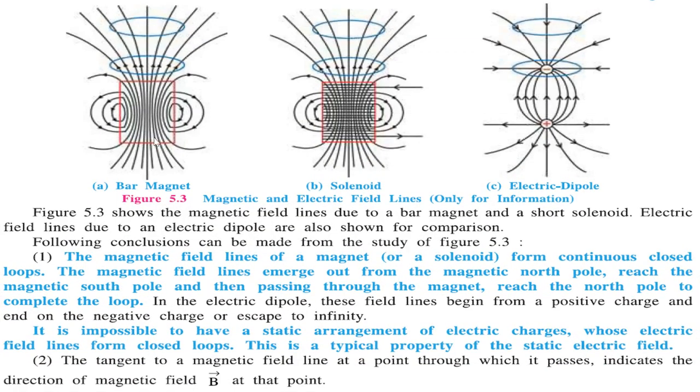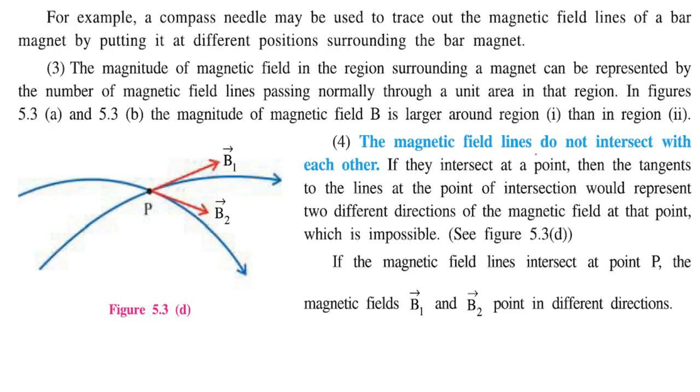The magnetic field lines do not intersect with each other, because if they are intersecting, that means at the same point there are two directions of the magnetic field, and that is impossible. If the magnetic field lines intersect at point P, the magnet should give you two directions of B, which is not possible.